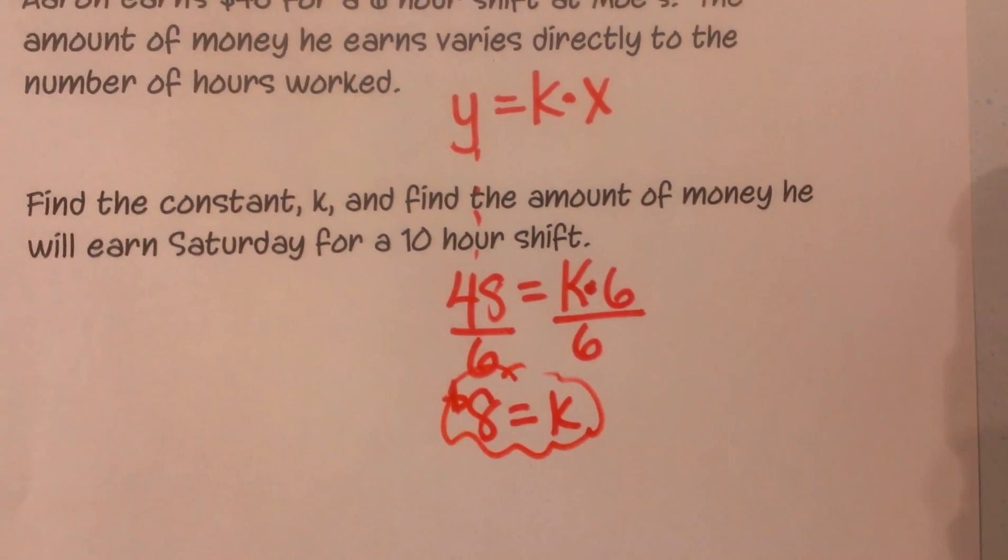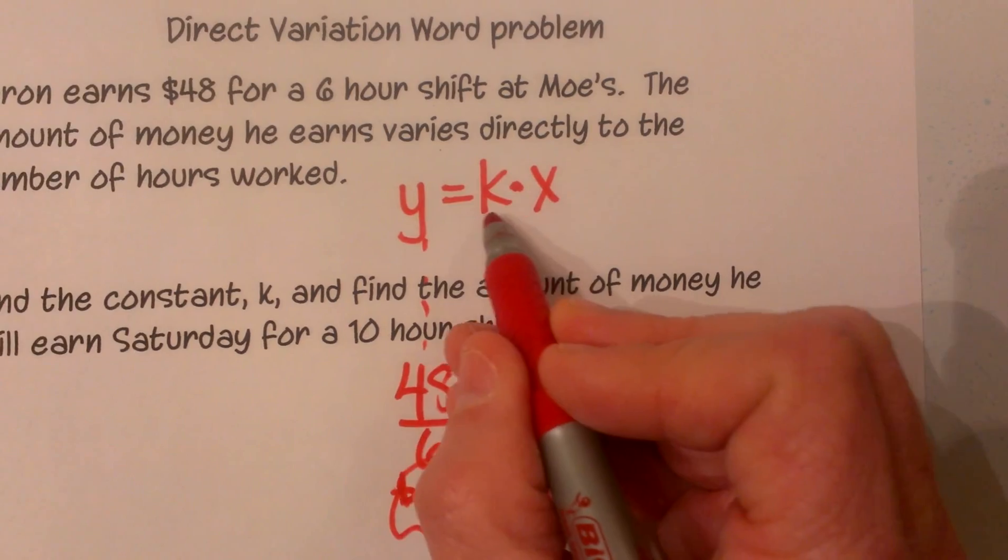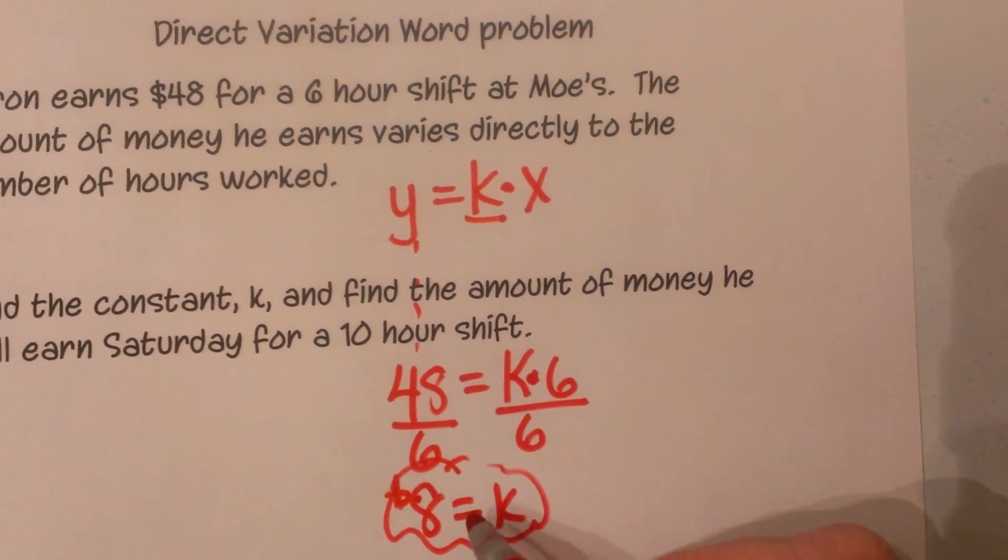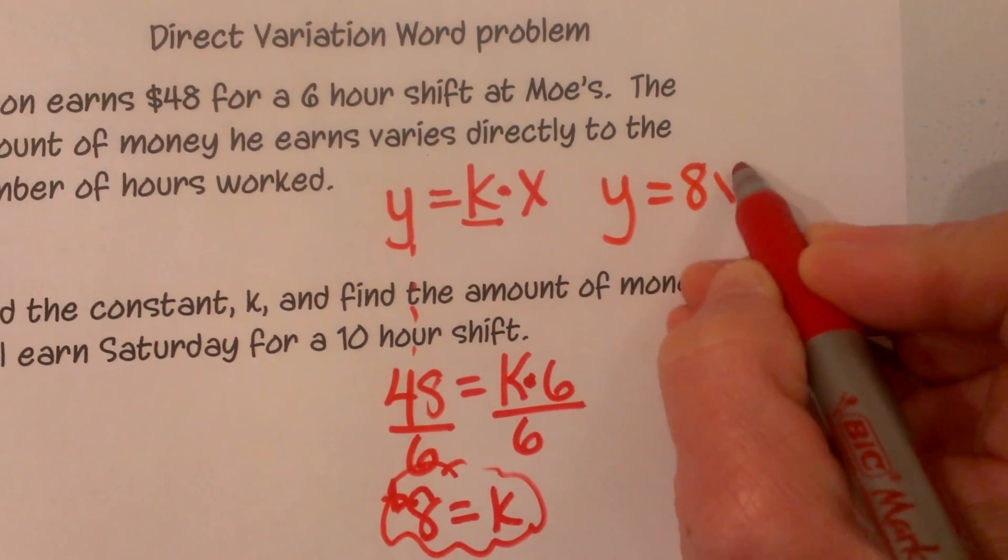So now my constant is k and I can take that 8 and go back to the original equation and plug in 8 for k. So my equation is going to be y equals 8x.